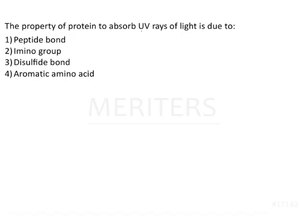The property of protein to absorb UV rays of light is due to peptide bond, imino group, disulfide bond, and aromatic amino acid. Among the given options, the peptide bond denotes the covalent bond encountered in the primary structure of a protein. Imino group is found in proline, and disulfide bond is a covalent bond found between cysteine residues to produce cystine, also having a role in the tertiary structure of the protein. Aromatic amino acid denotes the amino acid that has an aromatic group in its side chain.